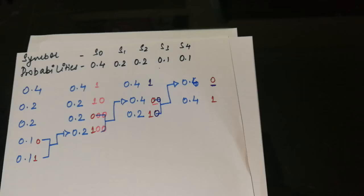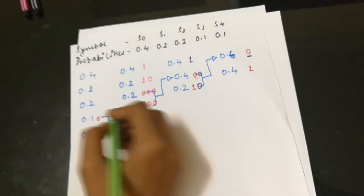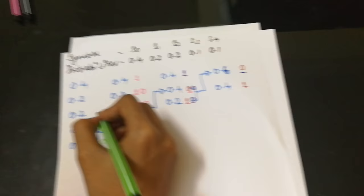Now this 0.2 is the result of these two probabilities. Here we have 1 0 0, so we write 1 0 0, and these are written here.